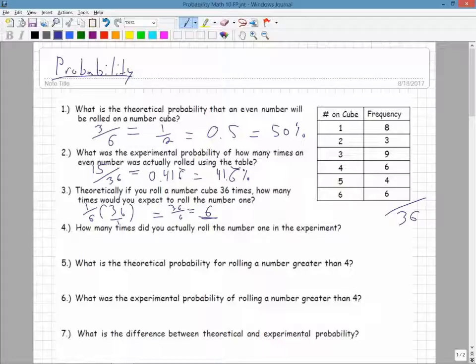How many times did you actually roll the number 1? So if I actually did this experiment, it was 8 times. So theoretical doesn't take into account if you roll a number cube, there's all sorts of different things that can affect the way that the frequency occurs. Is it going to be equal to the theoretical probability all the time? Probably not.